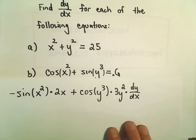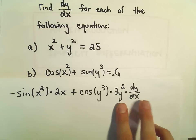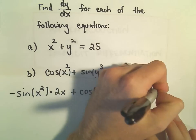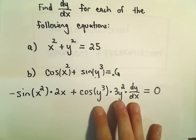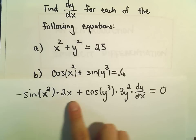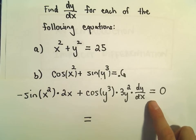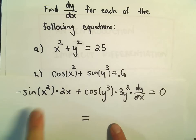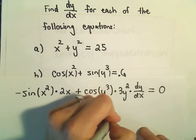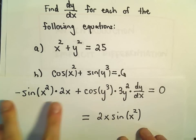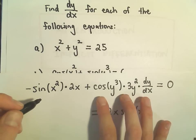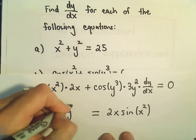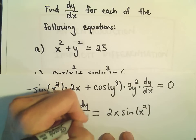I took the derivative of something involving y, so I tack on the dy/dx right here. On the right side, 0.6 — the derivative of that is just 0. Our goal is to solve for dy/dx. So I'm going to add the first term over to the right side — negative sine x squared times 2x becomes positive 2x sine x squared. We're left with 3y squared times cosine of y cubed times dy/dx.